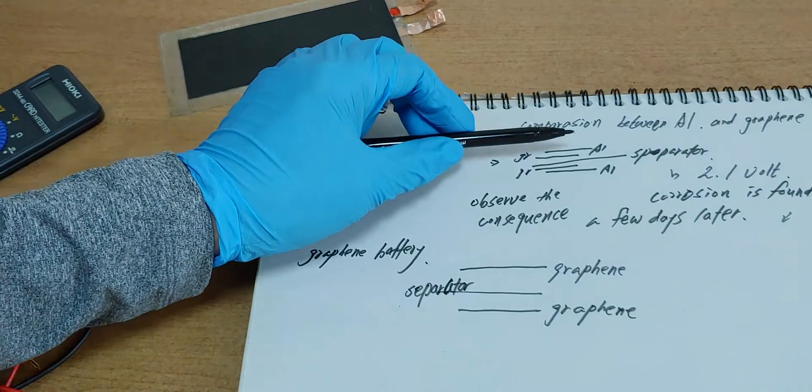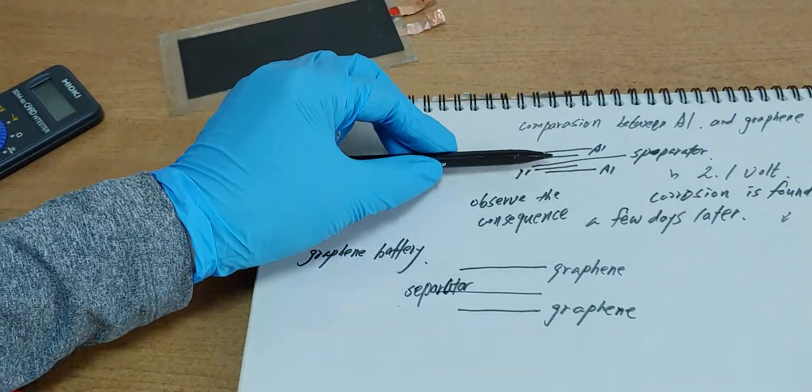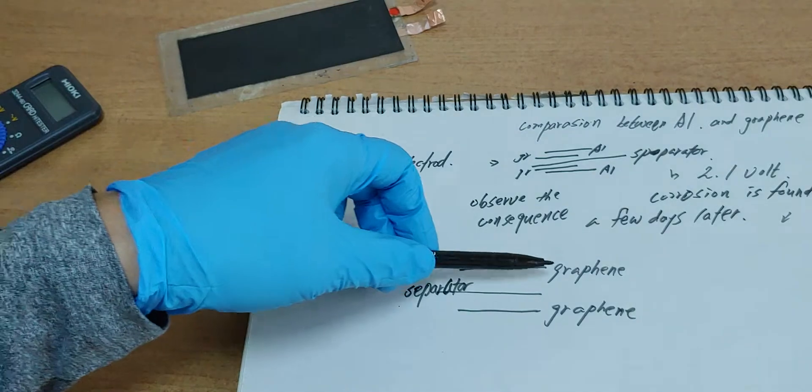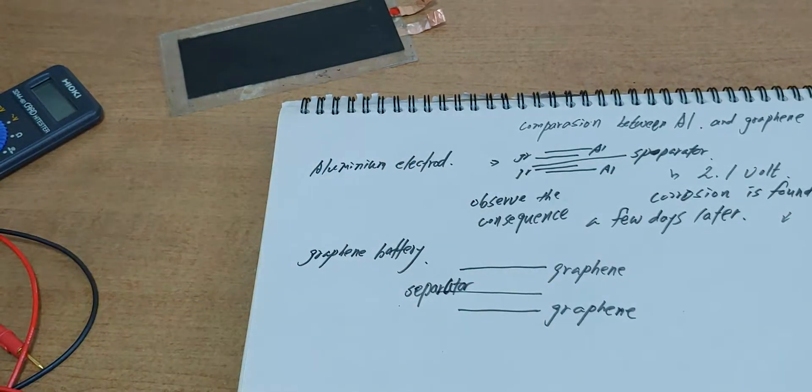For aluminum battery, we use aluminum, graphene, graphene separator. But graphene battery: graphene, graphene separator. Really simple.